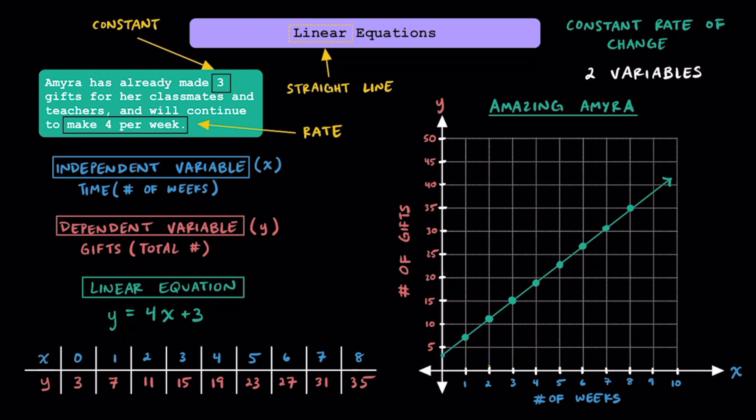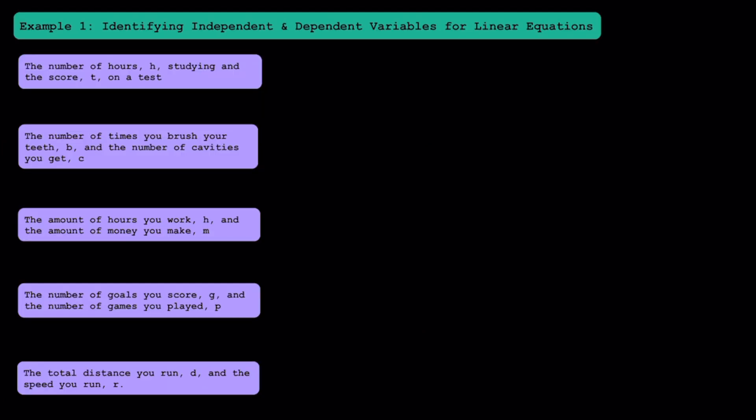Now that you have a better understanding of what linear equations are, it's time to try some examples together. I encourage you to grab some paper and something to write with, and let's do some math together. In example 1, let's start with the basics and make sure we understand the difference between independent and dependent variables for linear equations.